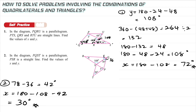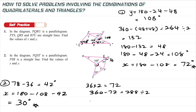Line PS bisects the angle here into two equal parts. First find the full angle: 36 × 2 = 72, then 360 − 72 = 288. Divide by 2: 288 ÷ 2 = 144 degrees for the full angle. Since PS bisects it, Y = 144 ÷ 2 = 72 degrees.